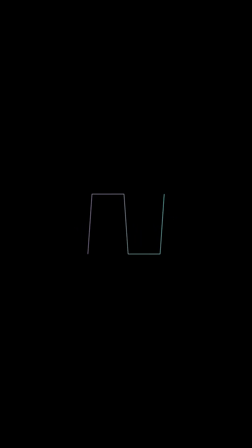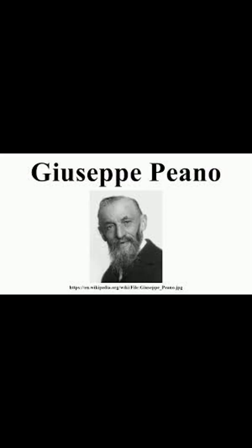In 1890, Italian mathematician Giuseppe Peano discovered that if you continuously divide a straight line segment into three parts and bend it back and forth, after many iterations it transforms into a curve that fills an entire plane, known as the Peano Curve.